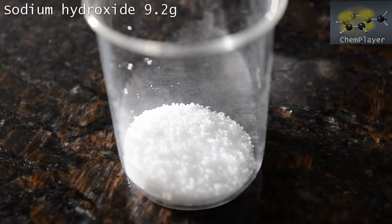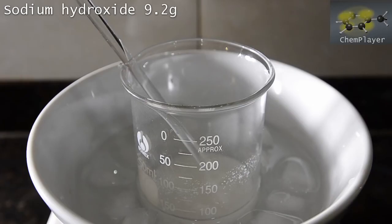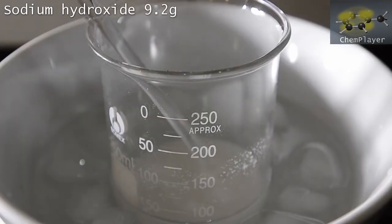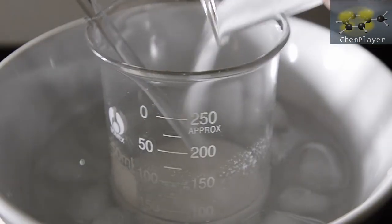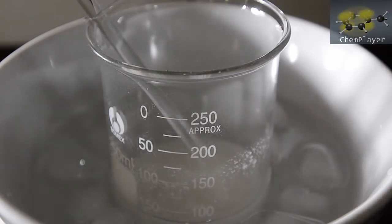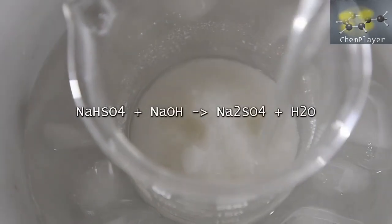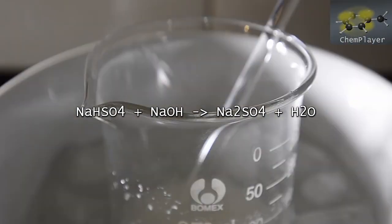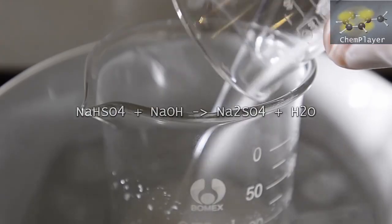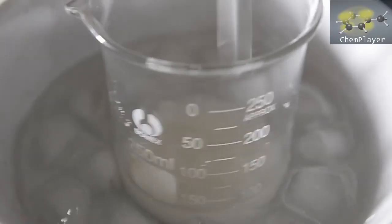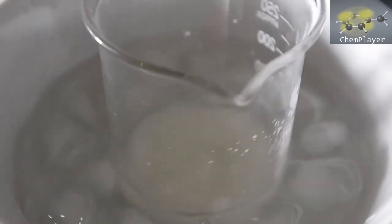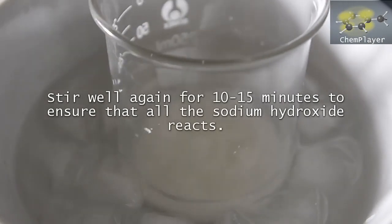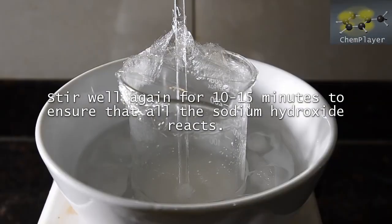Measure out another 9.2 gram portion of sodium hydroxide, and with the mixture sitting in the ice bath, add this to the mixture and then stir in well again. Some more heat will be generated. We're now converting the sodium hydrogen sulfate into sodium sulfate. This is also going to generate some water, but that should be absorbed by the sodium sulfate forming a hydrate. You'll need to stir the mixture well for about 10 minutes to get the reaction to complete.